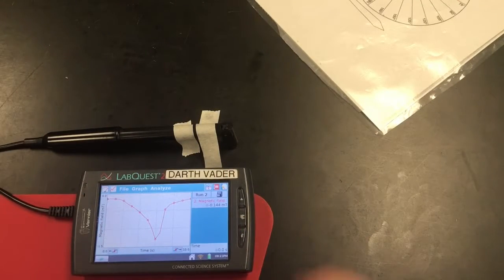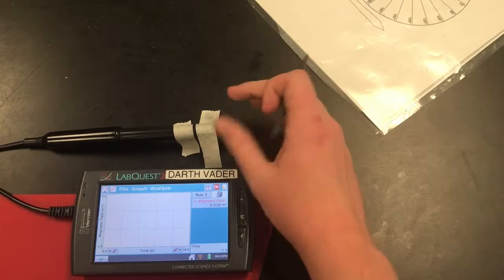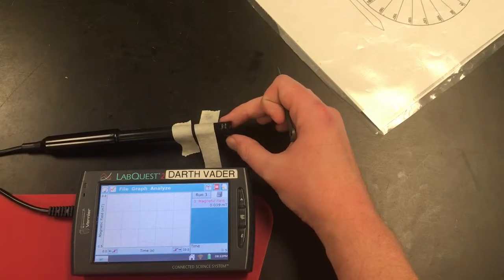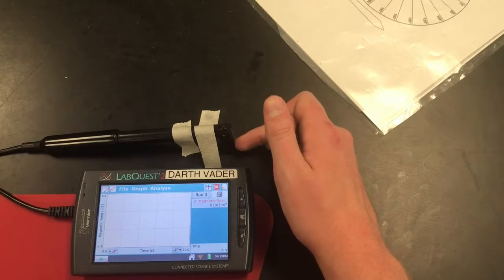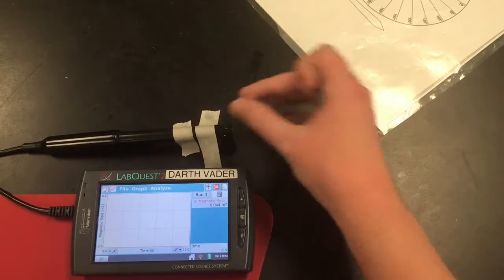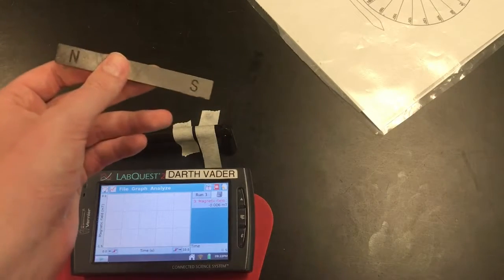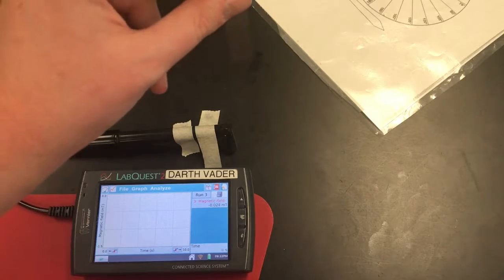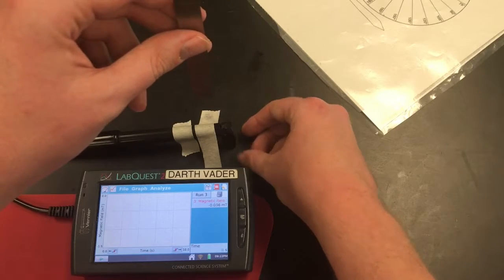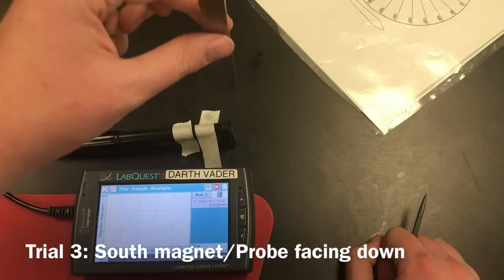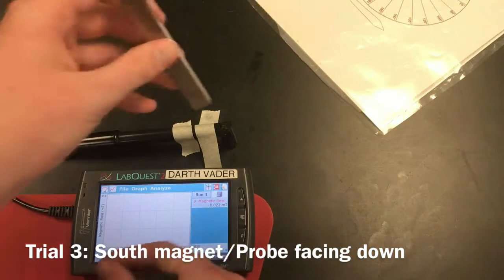For the third trial here, I'll go into the filing cabinet again. We'll start a run three. This time I taped the magnetic probe down so you want the tip of the probe facing down. I taped it in a couple different places to get it to stay. We're going to go south end again, similar to the first run. South magnet down and then we'll pull back up. So I'll start the trial.